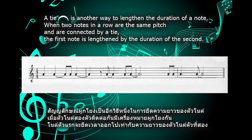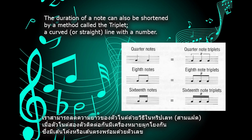A tie is another way to lengthen the duration of a note. When two notes in a row are the same pitch and are connected by a tie, the first note is lengthened by the duration of the second. The duration of a note can also be shortened by a method called the triplet, a curved line with a number.